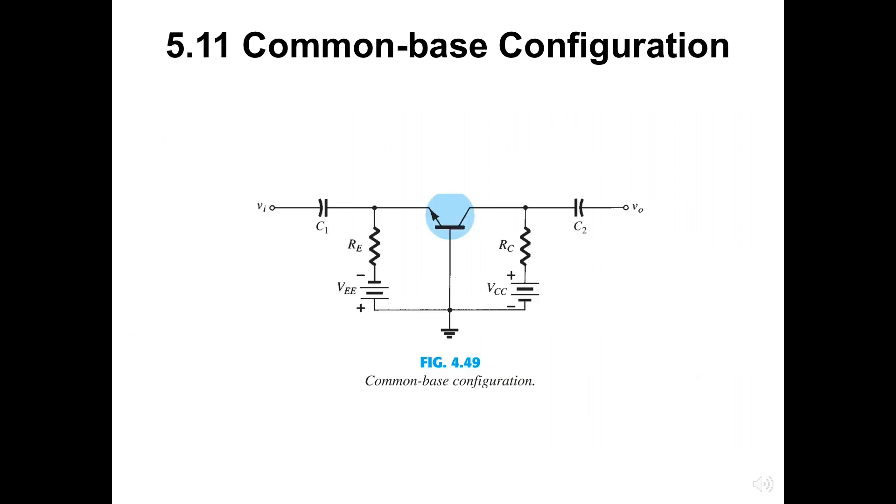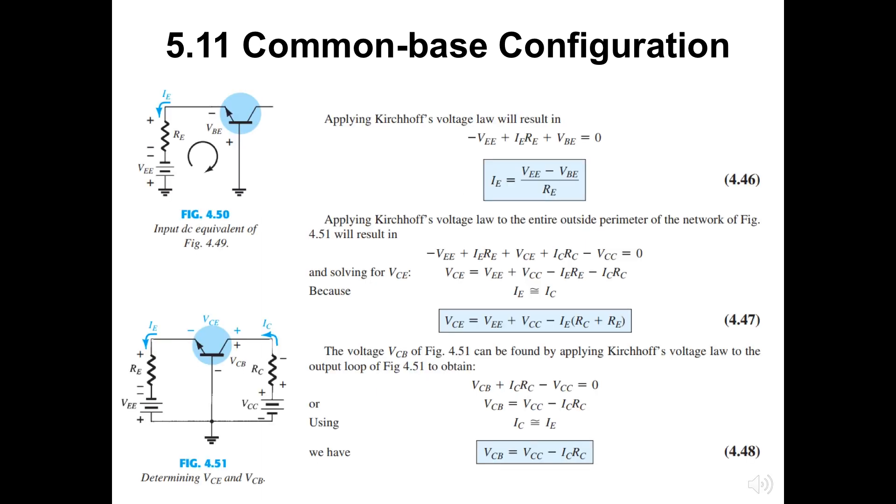The common base configuration is illustrated as the figure 4.49. We can see the base is common to both input and output of the transistor. Both sides are connected to the DC source with resistor RE and RC. At first, consider the KVL for the left-hand sided loop. Then we need to apply the KVL for all the outer perimeter of the network. The VCB is equal to VCC minus ICRC as equation 4.48.